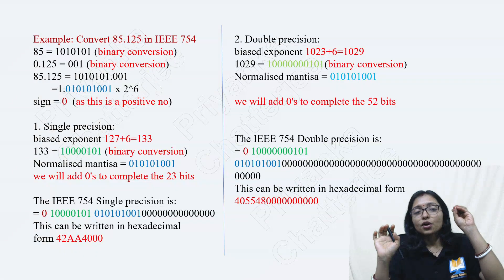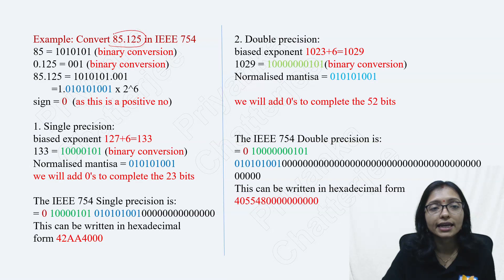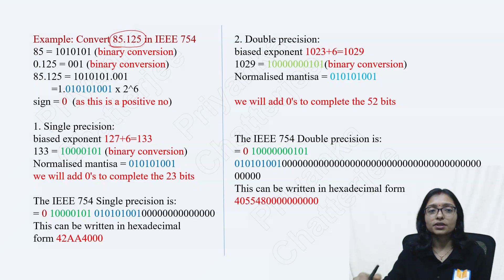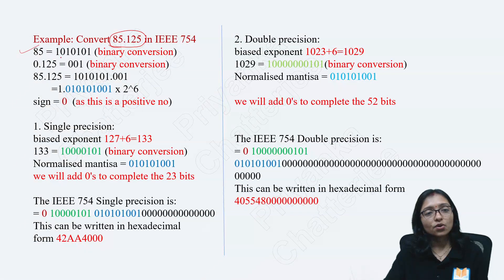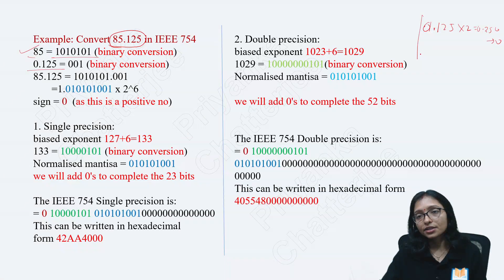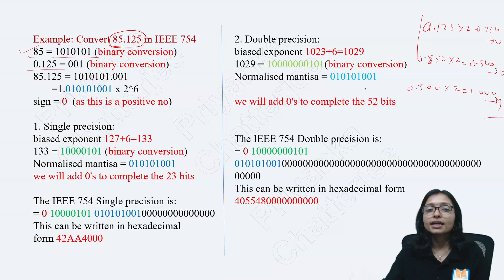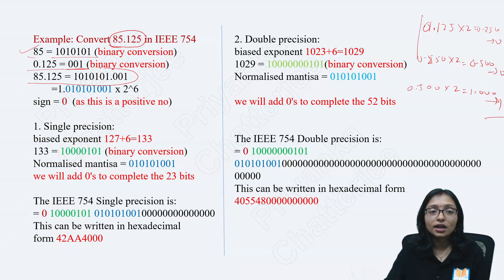It is easy. Focus on the color — within 5 minutes you can understand very easily. I am going to convert the number 85.125 into floating point representation. First I will represent it in normal binary. For 85, use normal binary. For 0.125: multiply 0.125 by 2 to get 0.250, take 0; multiply 0.250 by 2 to get 0.500, take 0; multiply 0.500 by 2 to get 1.000, take 1. So you get 001. Your total binary representation of the number is like this.